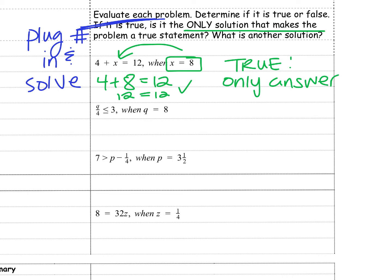We look at this next one. Fractions mean division. So q divided by 4 is less than or equal to 3. And q is 8. So I'm going to put 8 in for q. So 8 divided by 4, less than or equal to 3. 8 divided by 4 I know is 2. Is 2 less than or equal to 3? Yes, it is. It's true again.